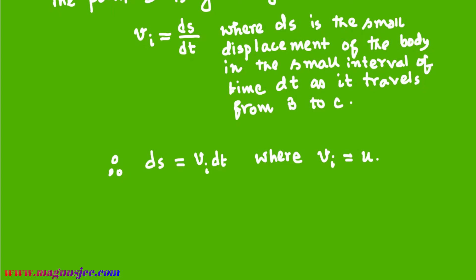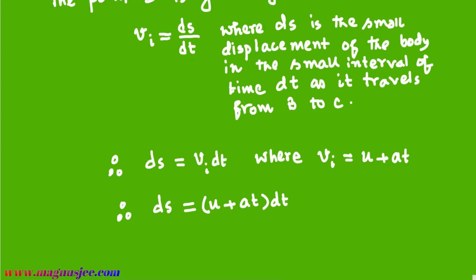Here, the instantaneous velocity Vi equals u plus at, where u is the initial velocity, a is the acceleration, and dt is the interval of time. Putting the expression of Vi into the equation for ds, we get ds equals (u plus at) times dt. This is equation 1.